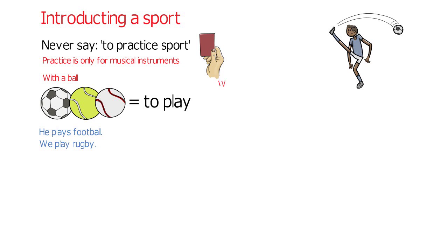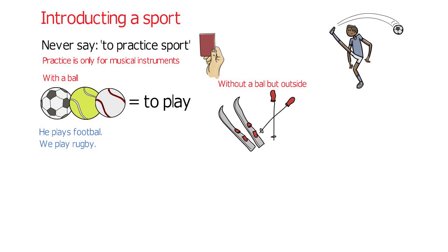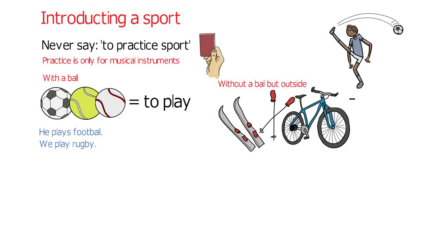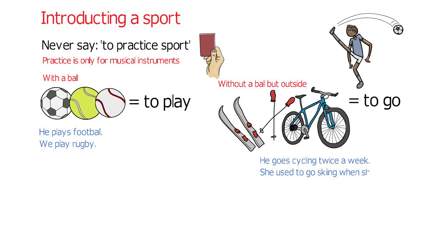Secondly, if the sport does not use a ball but usually happens outside — such as skiing, swimming, or cycling — use 'to go'. For example: 'He goes cycling twice a week' or 'She used to go skiing when she was younger'. We use 'to go' to reflect that you have to go to another location to do these sports.